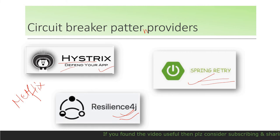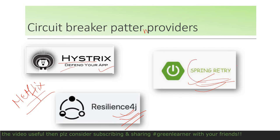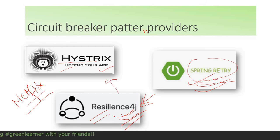There can be many more providers in the market. The demo will cover Netflix Hystrix and Resilience4j. Spring Retry may also be explained since whatever features it provides are also available in Resilience4j and it is very easy to use. Resilience4j is inspired by Netflix Hystrix — Hystrix came first, and then Resilience4j followed, focusing on functional programming and Java 8 features. It is generally better to use Resilience4j or whichever fits your application's requirement.